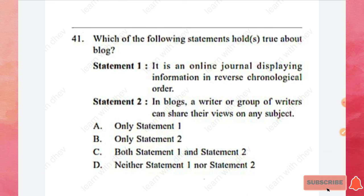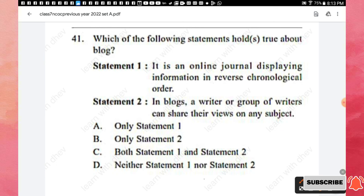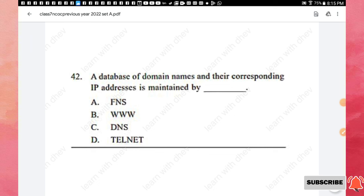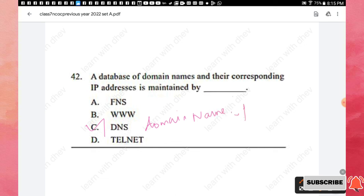Question 41: Which statements are true about a blog? Statement 1: it is an online journal displaying information in reverse chronological order. Statement 2: a writer or group of writers can share their views on any subject. Both statements are true, so option C is the right answer. Question 42: The database of domain names and their corresponding IP addresses is maintained by which service? The answer is option C — DNS (Domain Name System).